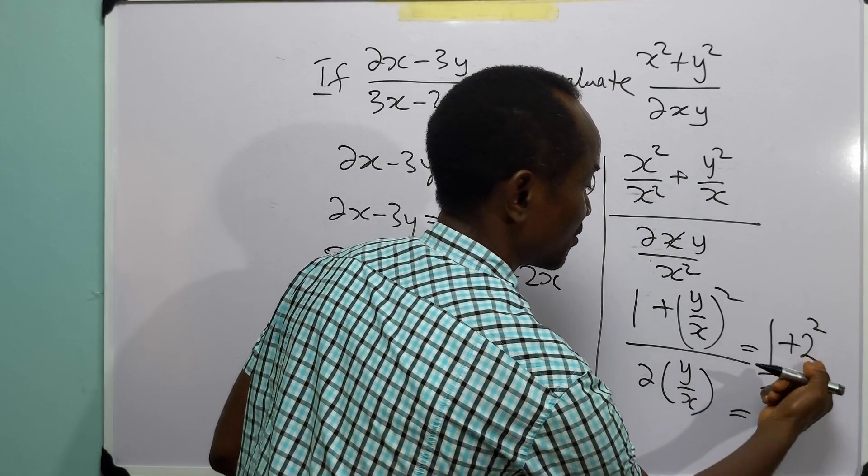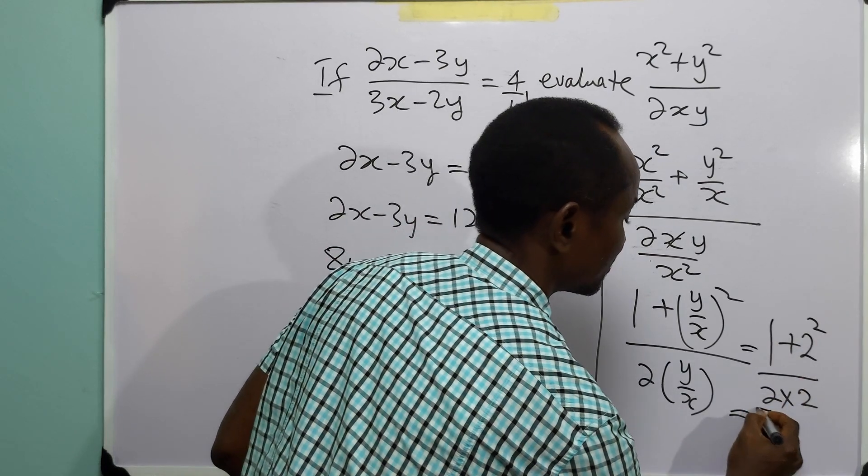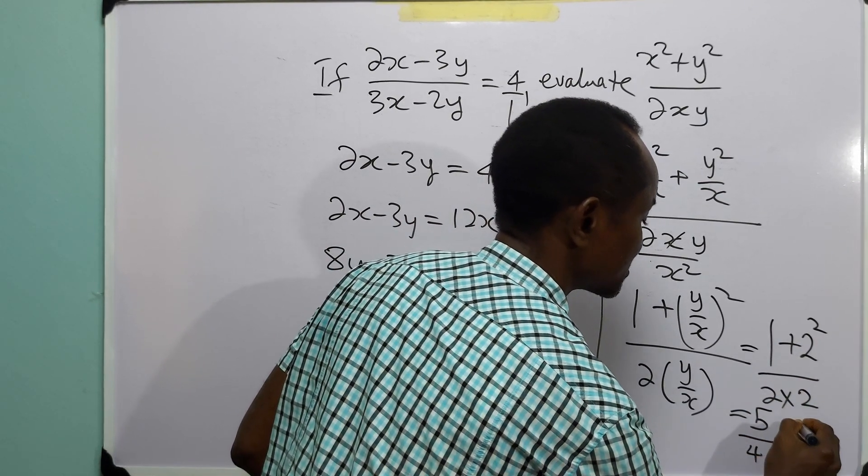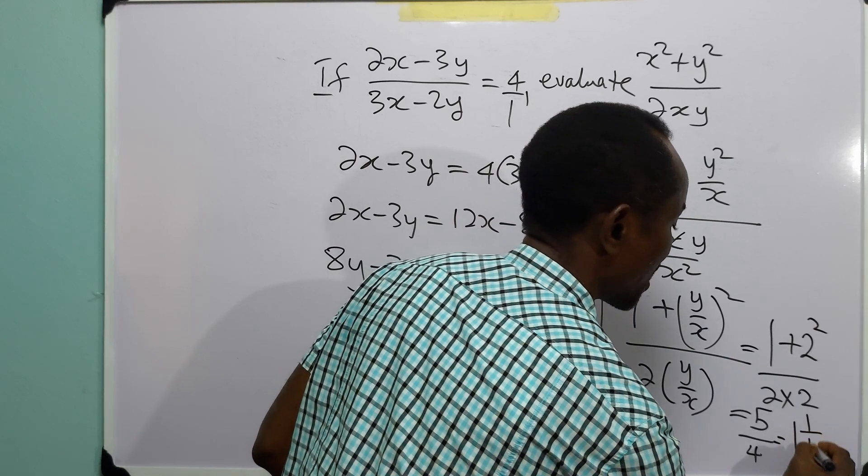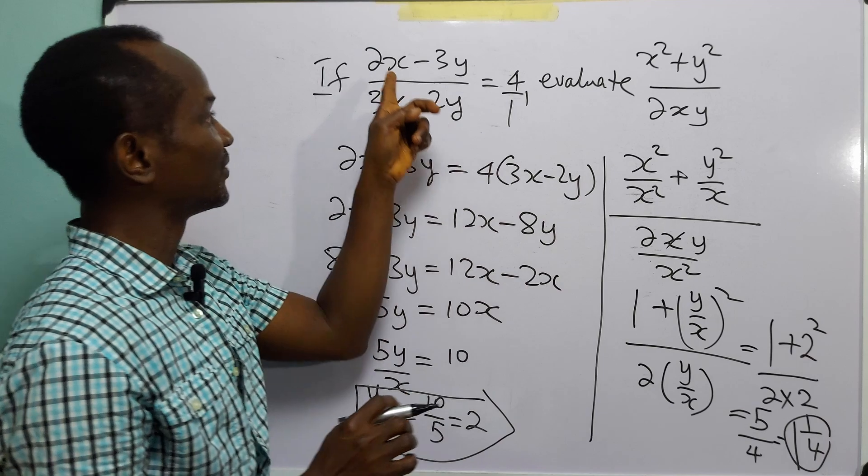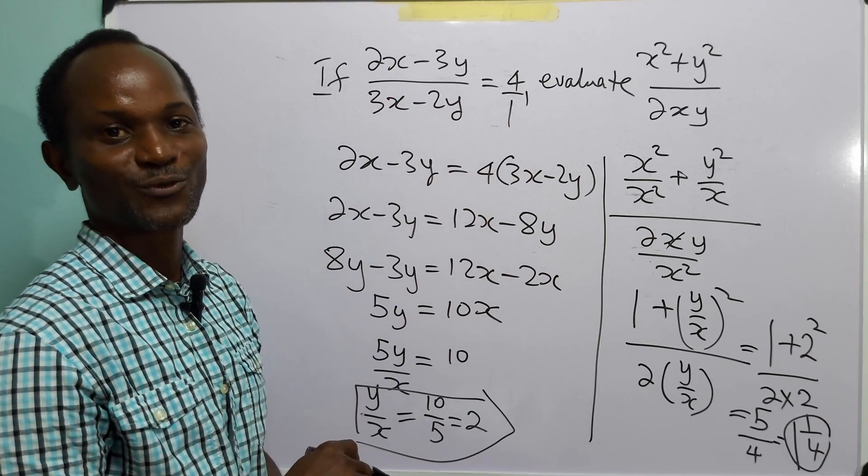And this is 2 squared is 4 plus 1, 5 over 2 times 2 is 4. And that is 1 whole number, 1 over 4, is the value of this, given that this is equal to 4.